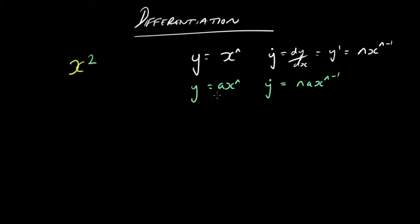So bearing that in mind, we'll do these examples. So if y equals x squared, then dy/dx is going to be equal to 2 times x to the 2 minus 1.